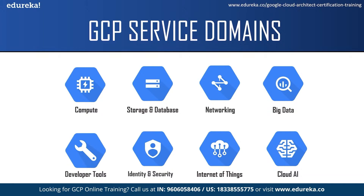Google also provides a free trial to all its new customers. It provides $300 in free credit to fully explore and conduct an assessment of Google Cloud Platform. You can use this $300 to try various Google Cloud products and learn how to use them. You won't be charged until you choose to upgrade and it is valid for 90 days. GCP also has a free tier in which all Google Cloud customers can use selected products like Compute Engine, Cloud Storage and BigQuery free of charge within specified monthly usage limits. We are mentioning the GCP free trial because we are going to use it for our demo.